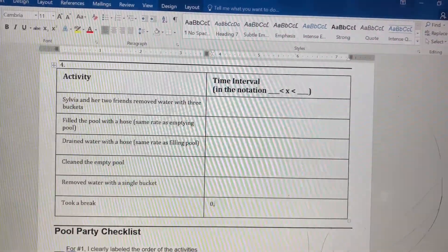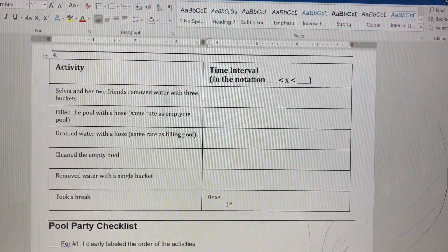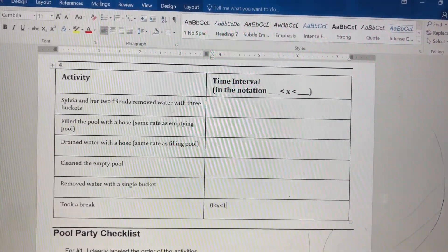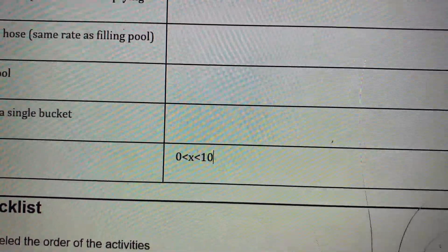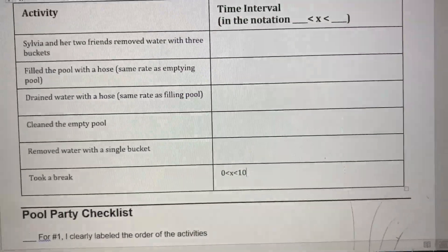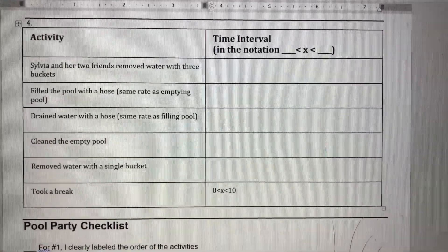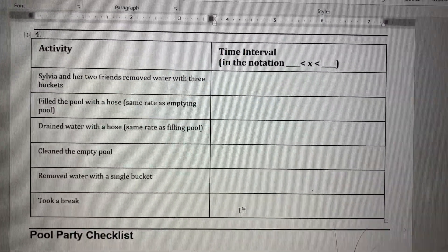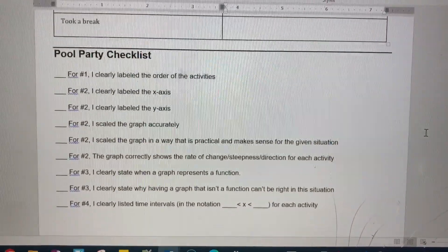You would say maybe from zero to—let's say they took a break for ten minutes for the first ten minutes. Then that would look like that. You would say from zero to ten, right? Zero is less than x which is less than ten. That would be the time interval for when they took a break. Obviously that's not the answer, but do your best on that.